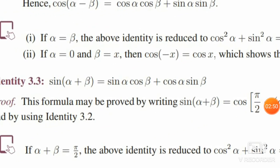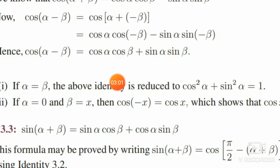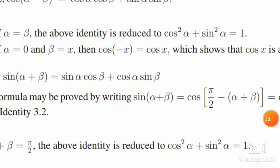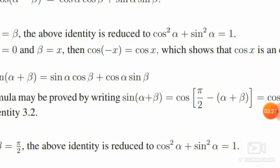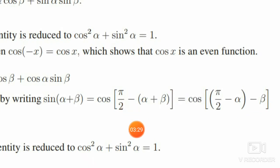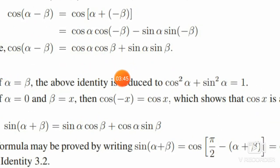Now Identity 3.3: sin of alpha plus beta is equal to sin alpha cos beta plus cos alpha sin beta. To prove this, we use the fact that cos of 90 minus theta is sin theta. So sin of alpha plus beta equals cos of pi by 2 minus (alpha plus beta). We group this as cos of (pi by 2 minus alpha) minus beta, which is a cos of a minus b form. Expanding using the cos(a minus b) formula: cos a cos b plus sin a sin b, we get the required result.